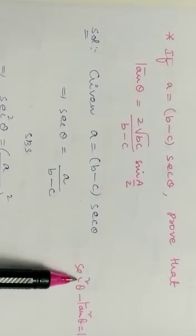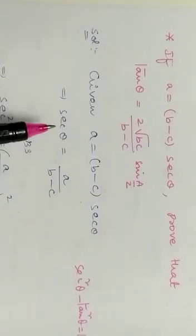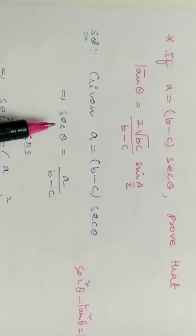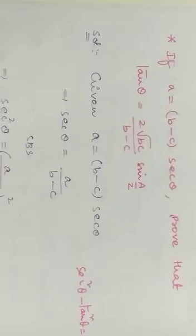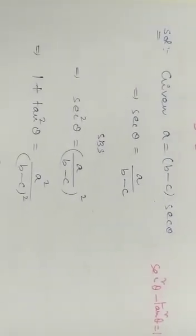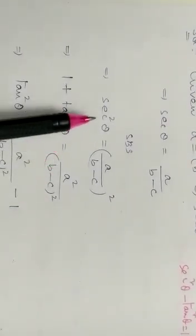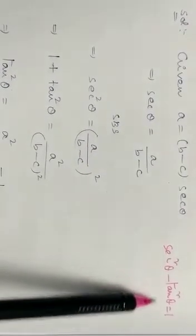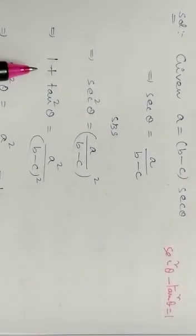This relation is applied when we have squares — secant squared and tan squared. So we need squares here. Squaring both sides, we get secant squared theta equals [a/(b minus c)] whole squared. Now, secant squared theta equals 1 plus tan squared theta, so: 1 plus tan squared theta equals a squared divided by (b minus c) whole squared.